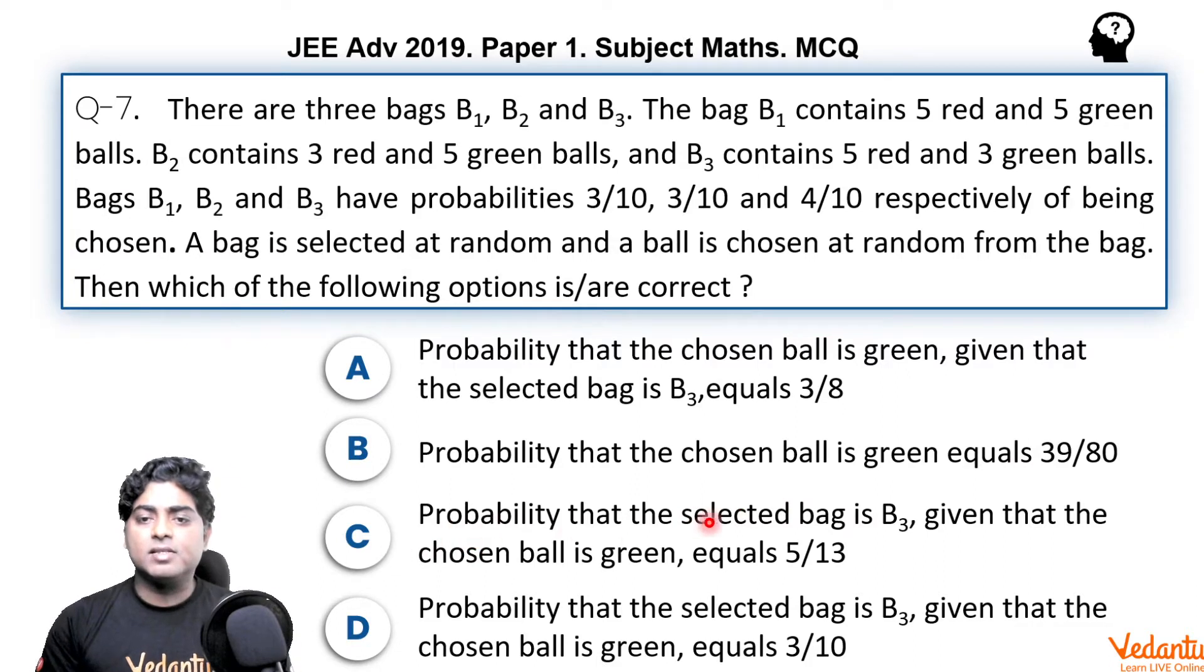Option C: probability that the selected bag is B3 given that the chosen ball is green. So the color of the final ball is known to us. We will have to go back finding the probability of some past event on the basis of final result known to us. This is according to reverse conditional probability. Bayes theorem we will apply to get this probability. Option D, the same thing is asked.